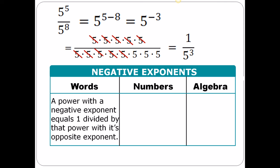This is an example of what it means to have a negative exponent. A power with a negative exponent equals 1 divided by that power with its opposite exponent. So 5 to the negative 3 is exactly the same as 1 over 5 cubed — they mean the same thing. And 5 cubed is less than a thousand, so you need to figure it out: it's 1 over 125.